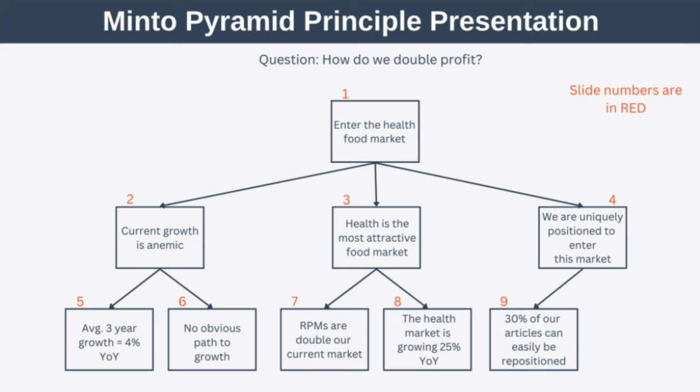Now let's take a look at how you can use the Minto Pyramid to give a presentation. Here you can see that each numbered box represents a slide of your presentation and the order in which you should show it — effectively your presentation outline. You can see that you're working down each branch of the pyramid in turn.